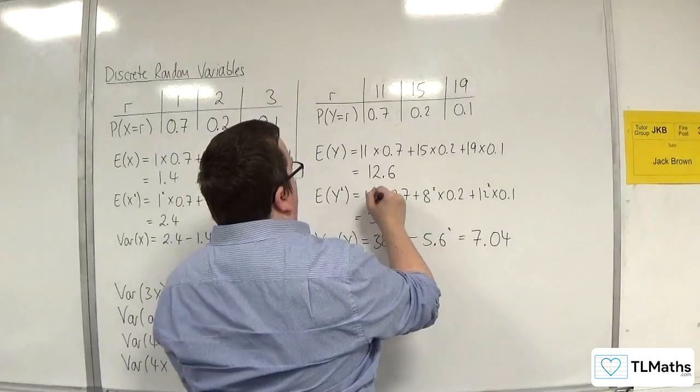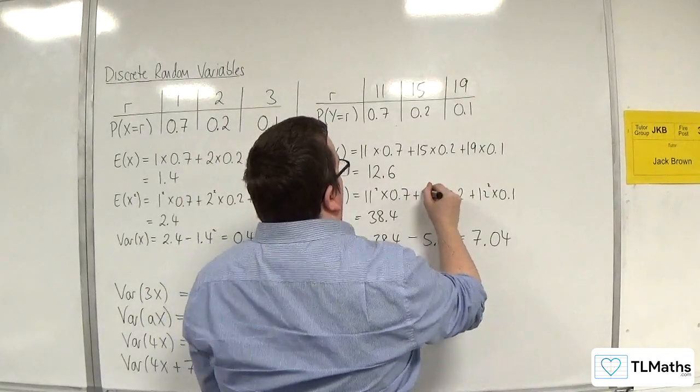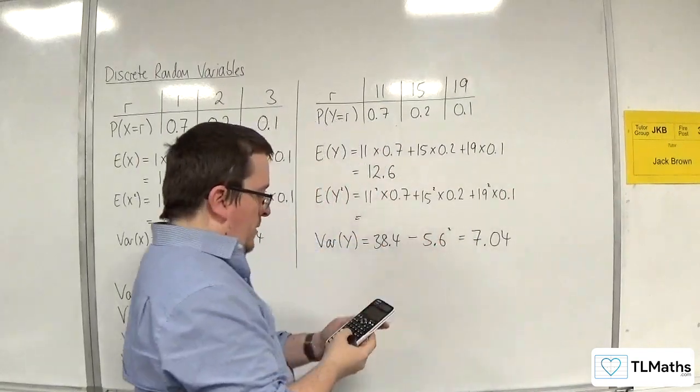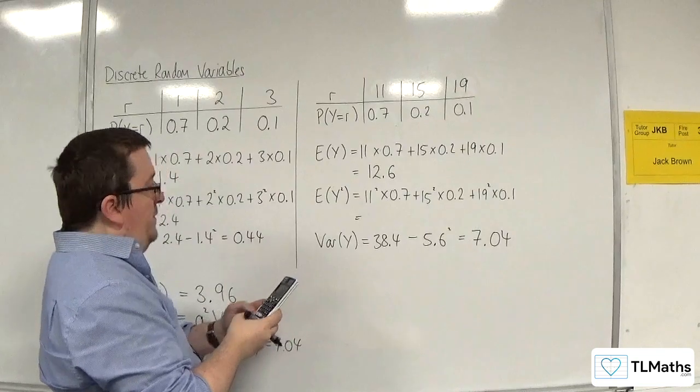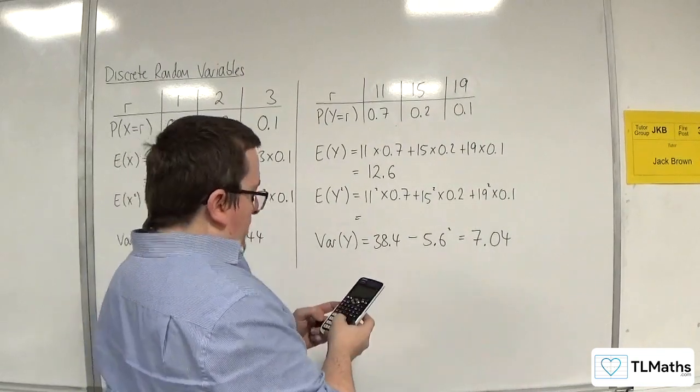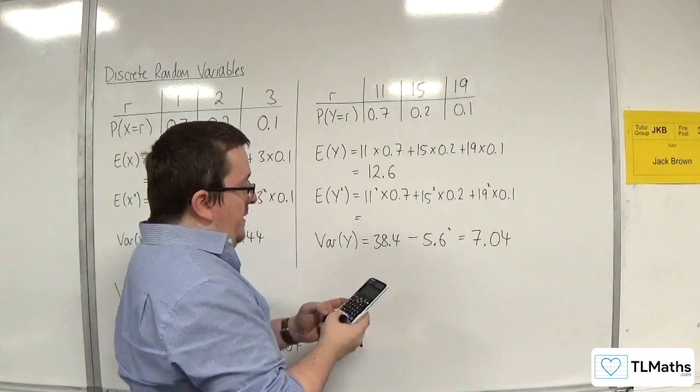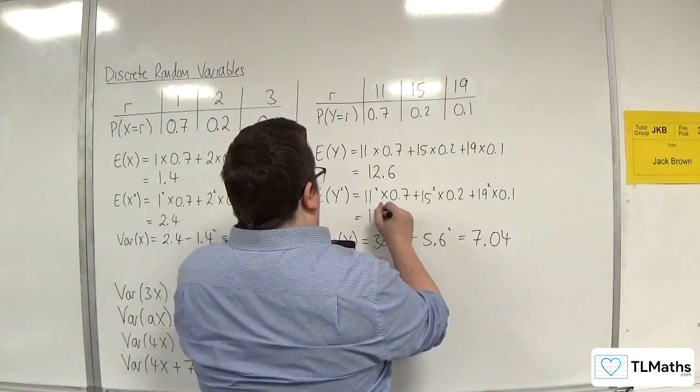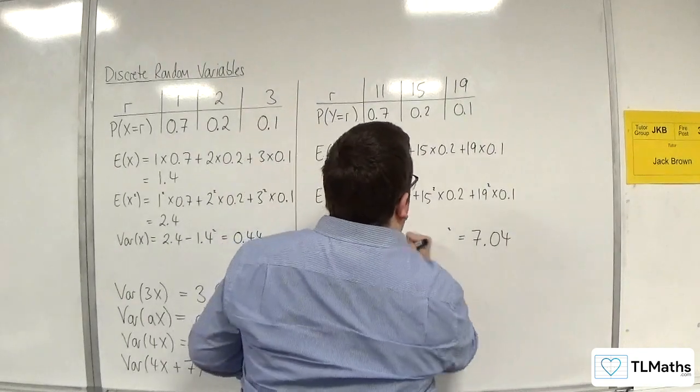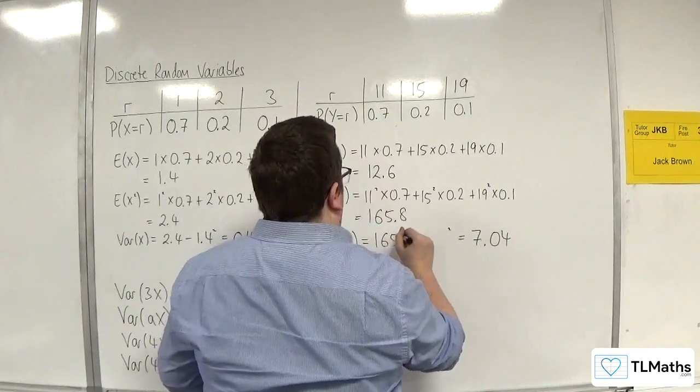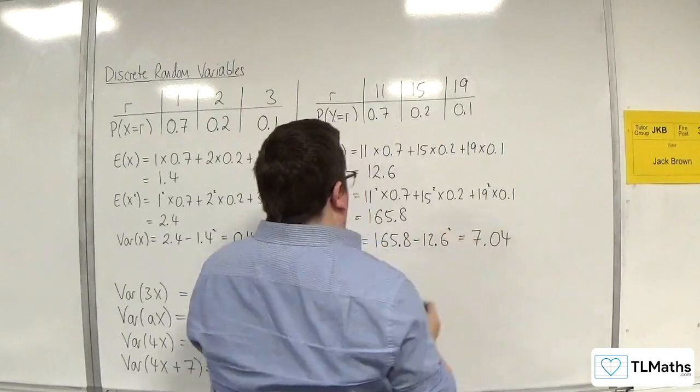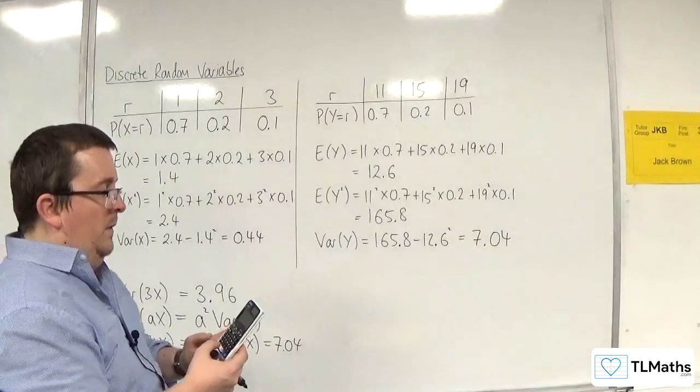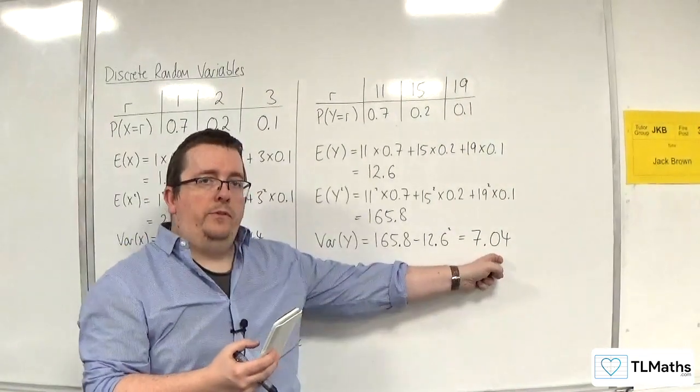Then we've got 11 squared, 15 squared, 19 squared. So 11 squared times 0.7, plus 15 squared times 0.2, plus 19 squared times 0.1, which gives 165.8. So 165.8 take away 12.6 squared, and we get 7.04.